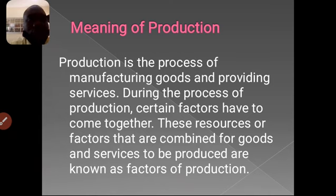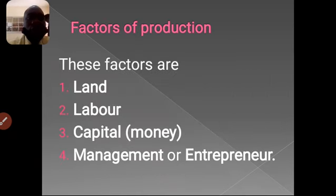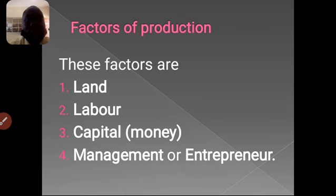These factors that we are going to look into are very, very important. What are these factors? Number one: land. Number two: labor. Number three: capital. Number four: management or entrepreneur. We are going to look at them one after the other, how they are very important in the production of agricultural activities or products.